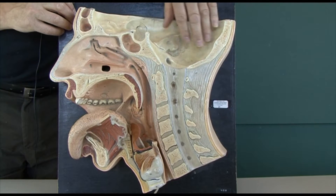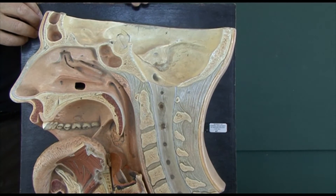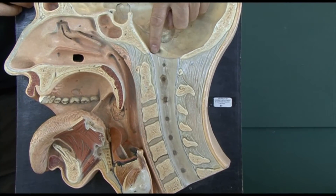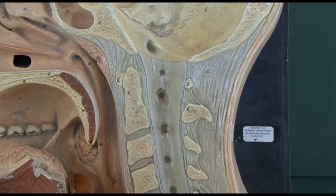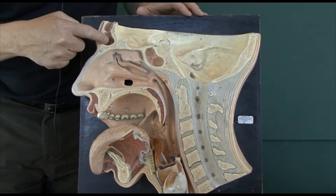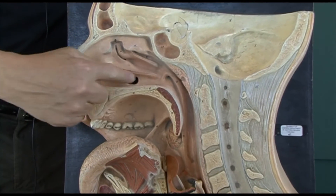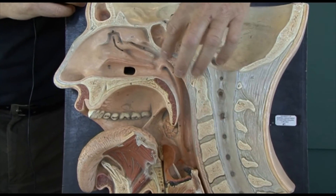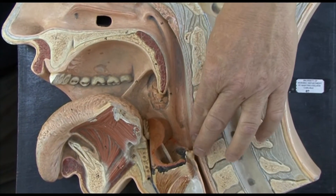Here we see the base of the cranial cavity, and here we see the start of the spinal cord. This is the hole in the base of the skull — the foramen magnum. Here we see sinuses filled with air, and the nasal cavities with the nasopharynx, oropharynx behind the mouth, and laryngopharynx.